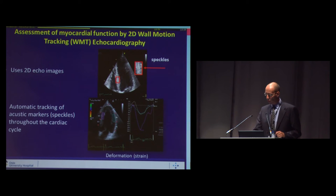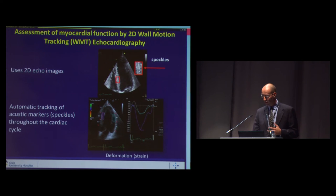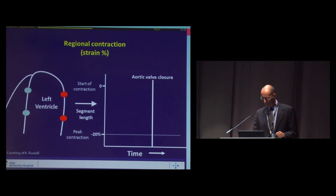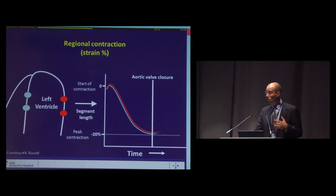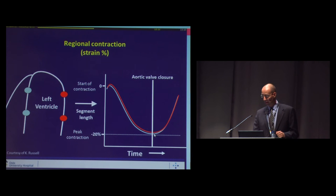The method 2D wall motion tracking echocardiography can be used to assess myocardial function. The method produces 2D echo images where the software can identify acoustic markers — these white and black dots, also called speckles — which are then automatically tracked throughout the cardiac cycle. By tracking these speckles, you can follow deformation throughout the cardiac cycle. Maximum myocardial deformation is usually reached at the end of systole at aortic valve closure.